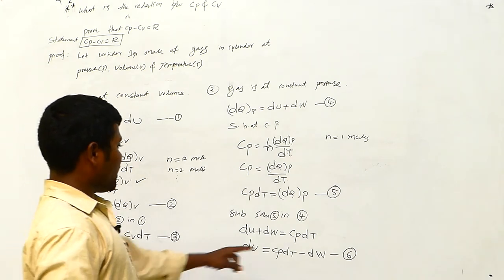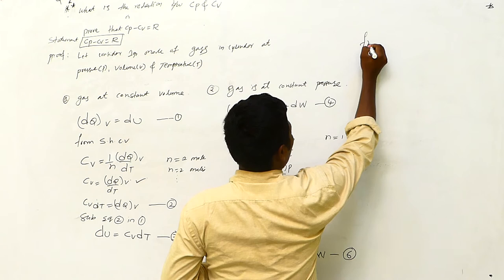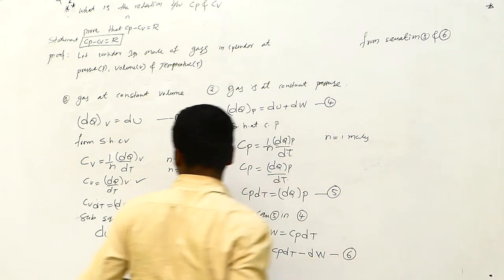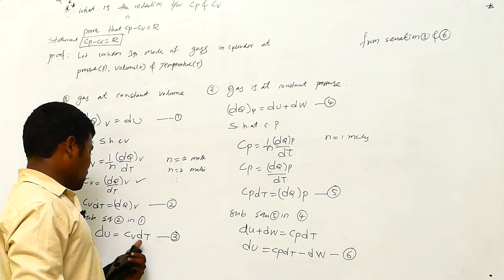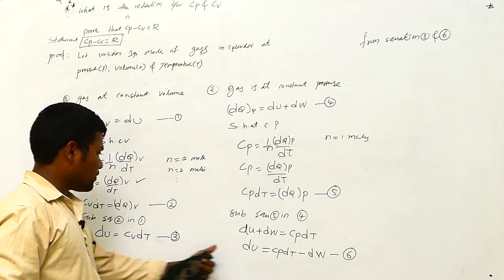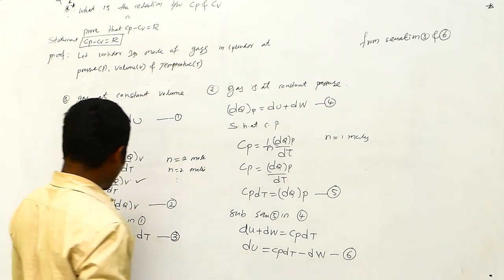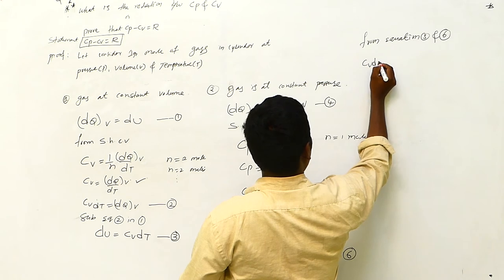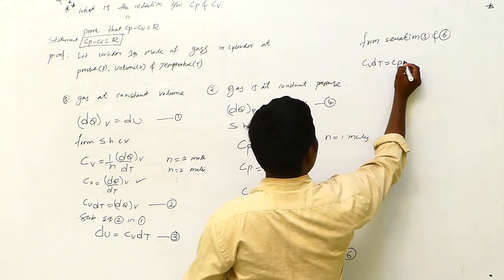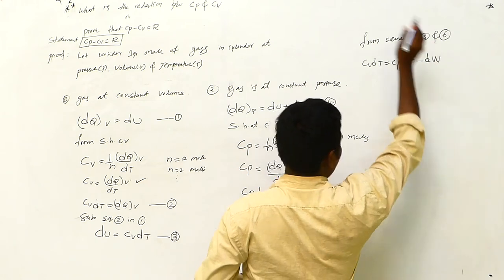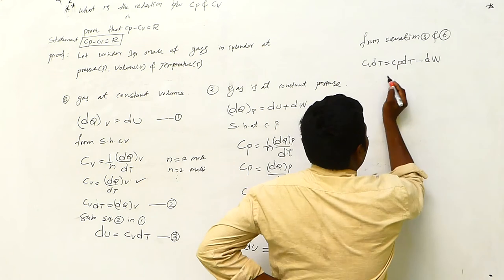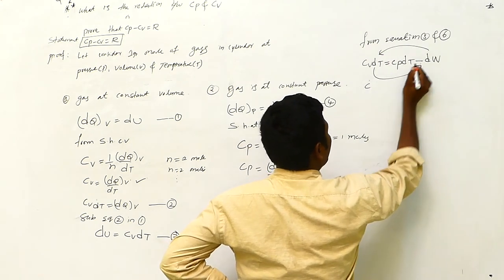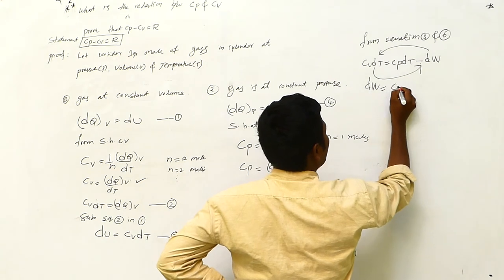Now equating equation three and equation six — both equal dU — we get Cv·dT equals Cp·dT minus dW. Rearranging: dW equals Cp·dT minus Cv·dT. Taking dt as common: dW equals (Cp minus Cv)·dT.